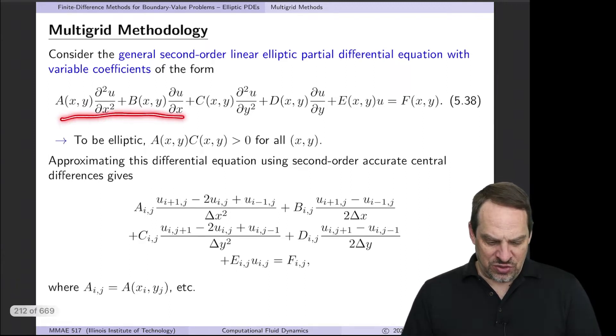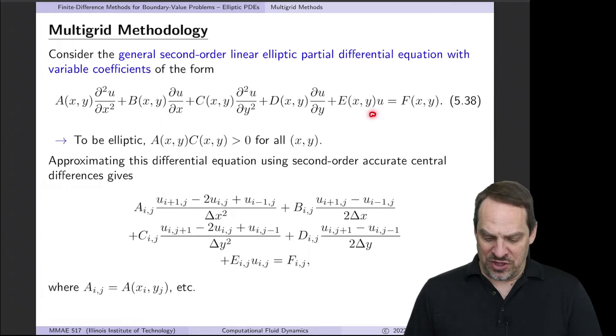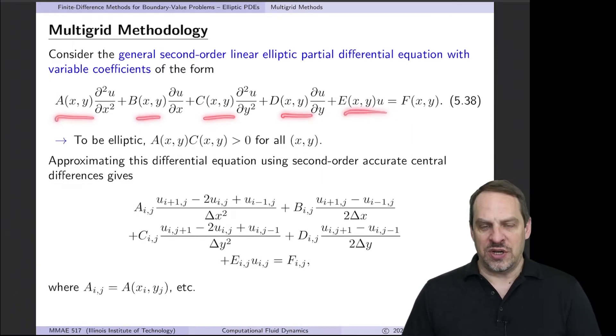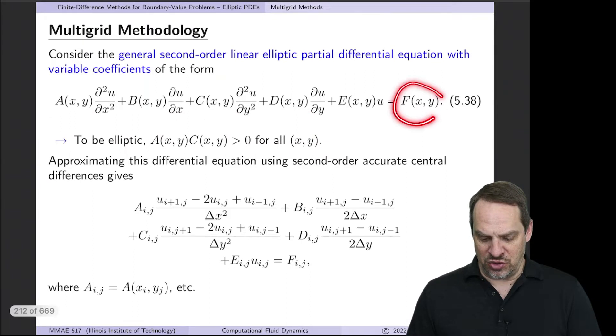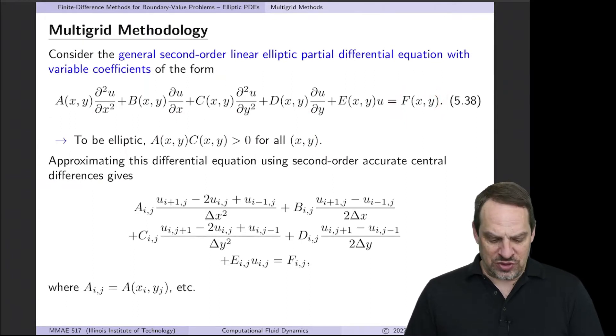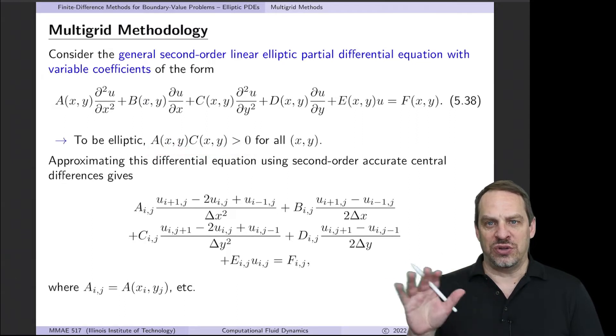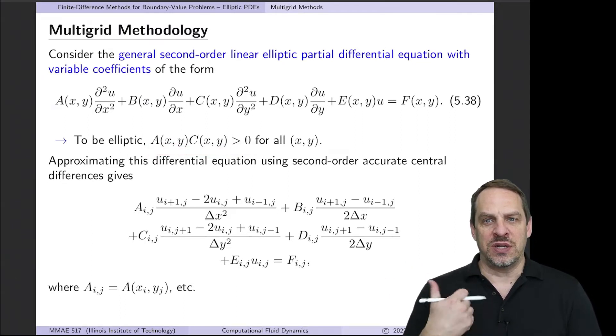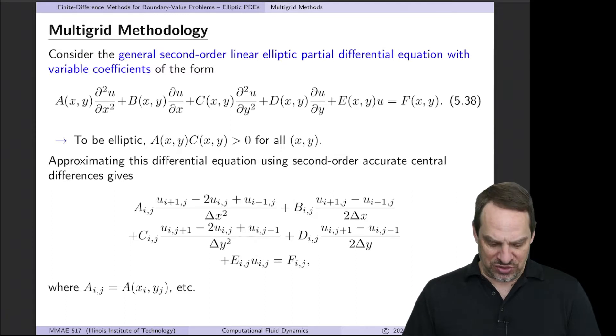So here we have a second order linear partial differential equation with variable coefficients. We have second order derivatives in x and y, first order derivatives in x and y, we have a zeroth order derivative term, and then we have these variable coefficients on each of those terms as well as a non-homogeneous right-hand side. This would be elliptic if A(x,y)C(x,y) is greater than zero.